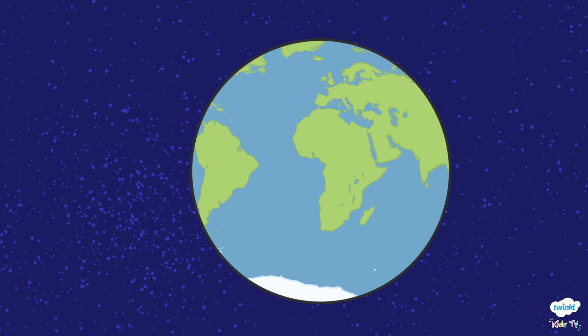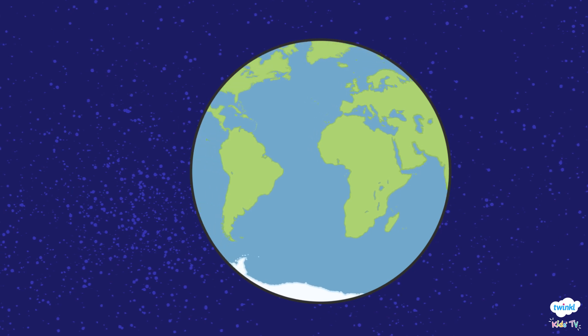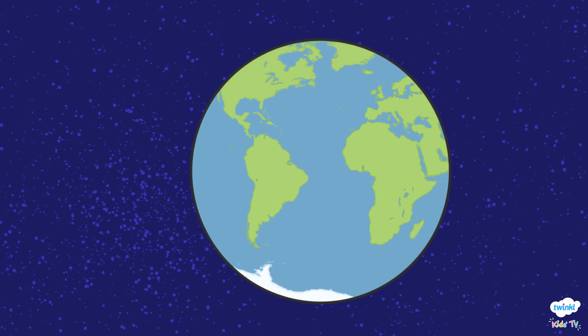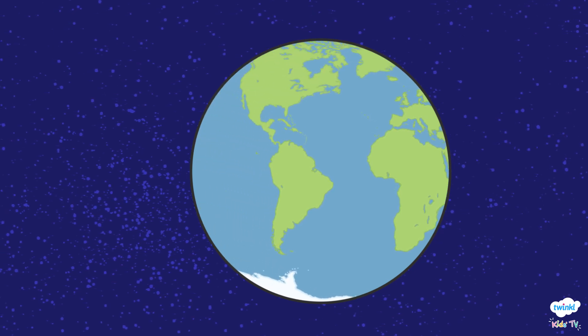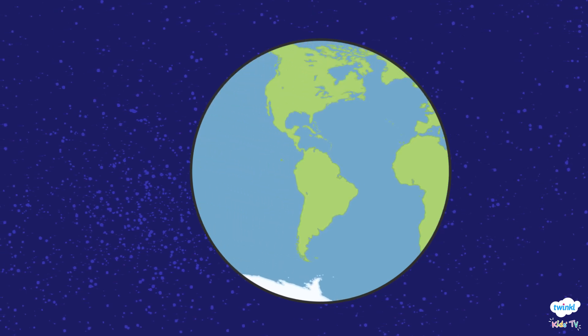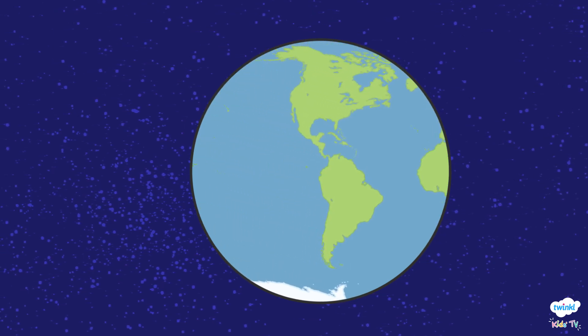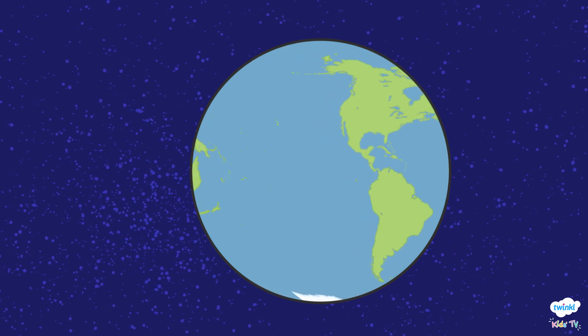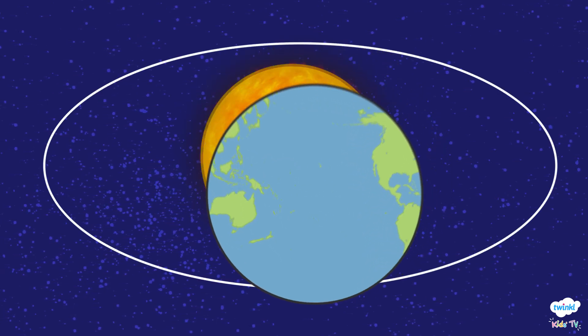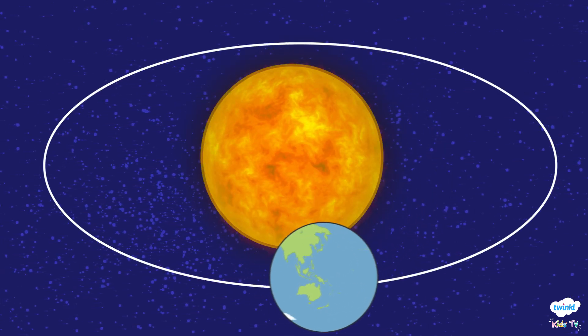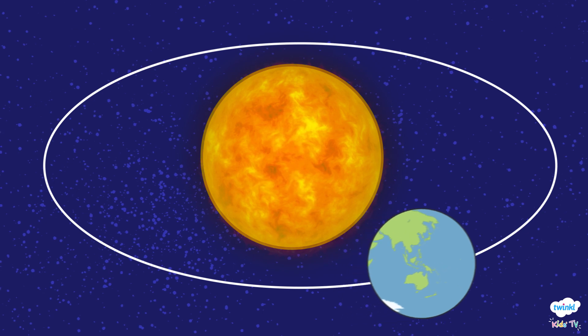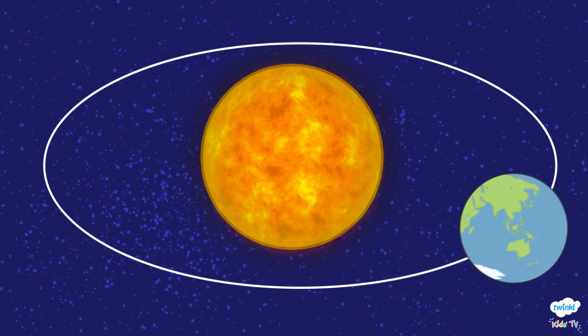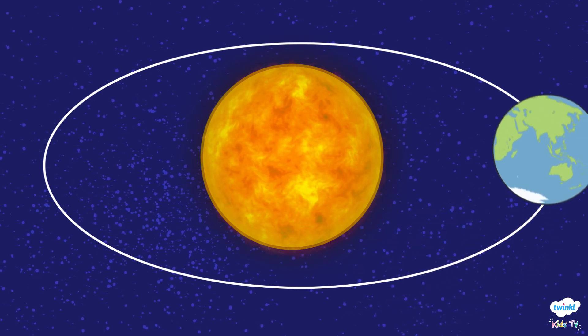This means that as it orbits the Sun, some parts of it are closer to the Sun and some parts of it are further away. It takes one year for the Earth to go around the Sun one time.